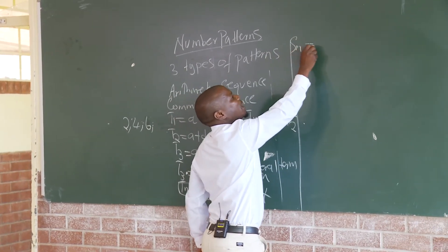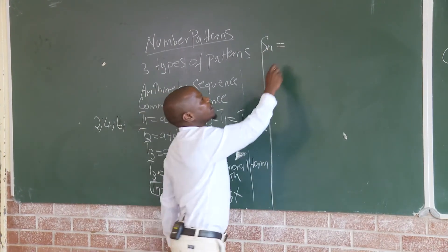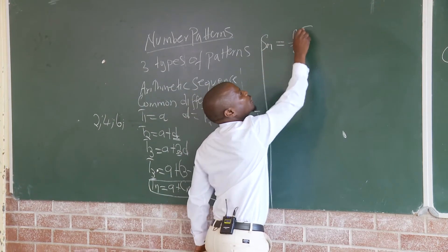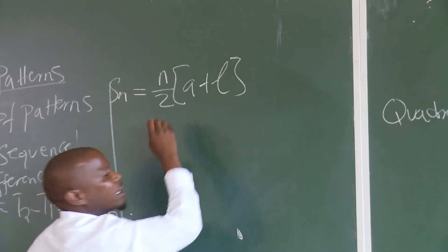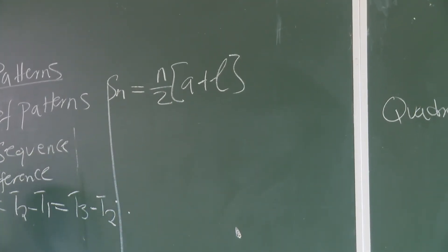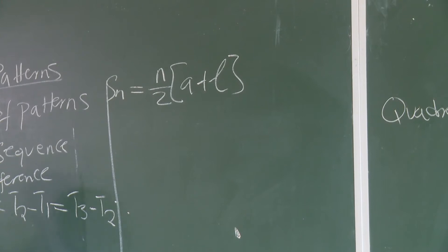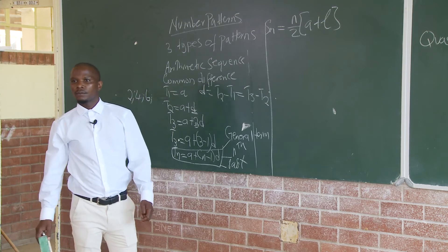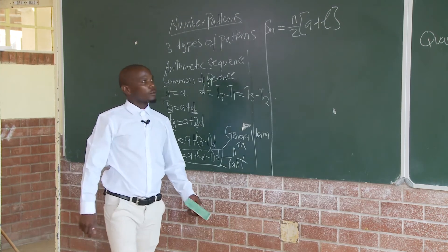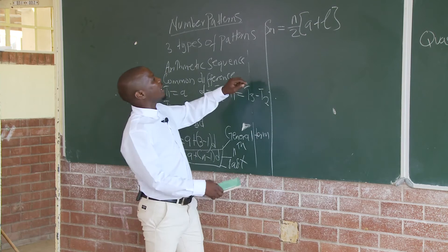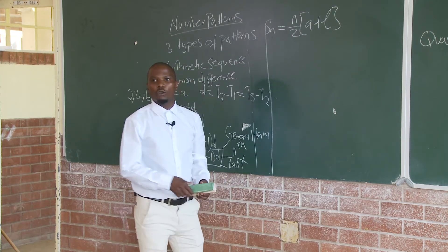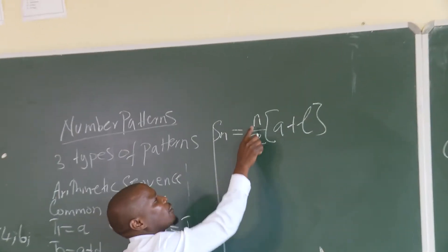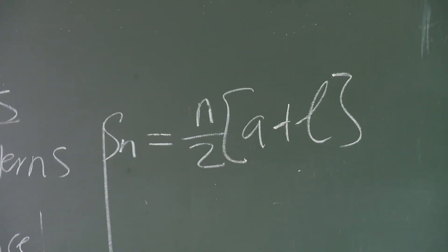The sum of N terms is equal to N over 2, multiplied by the quantity A plus the last term.